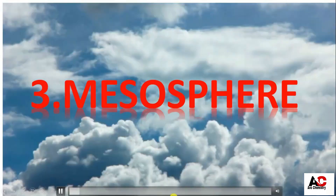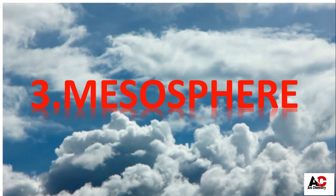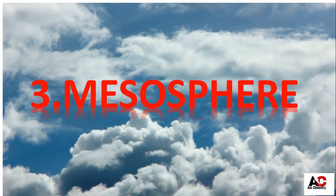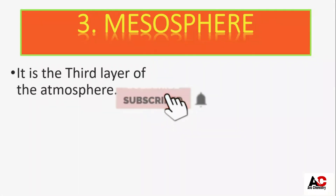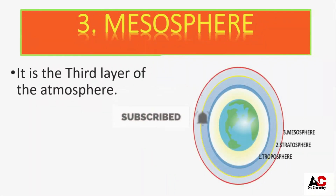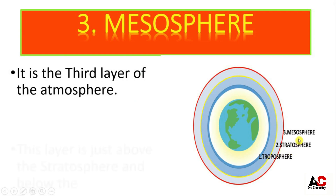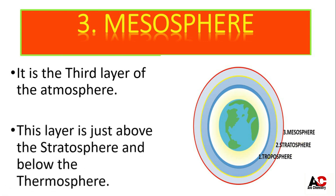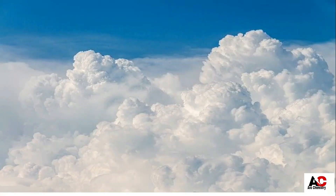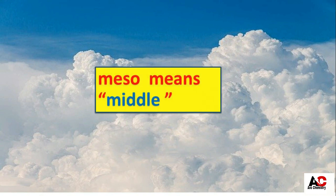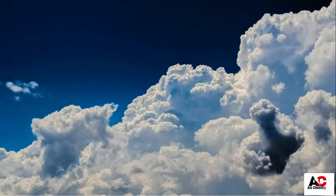Today we are going to discuss about the third layer of the atmosphere, the mesosphere. The first layer is the troposphere, the second layer is the stratosphere, and the third layer is the mesosphere. This layer is just above the stratosphere and below the thermosphere. Meso means middle, because it is the middle layer of the atmosphere, so its name is mesosphere.